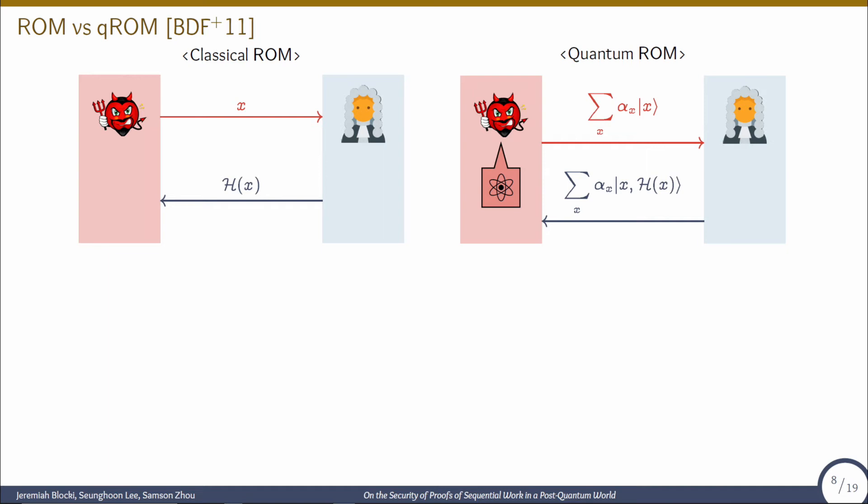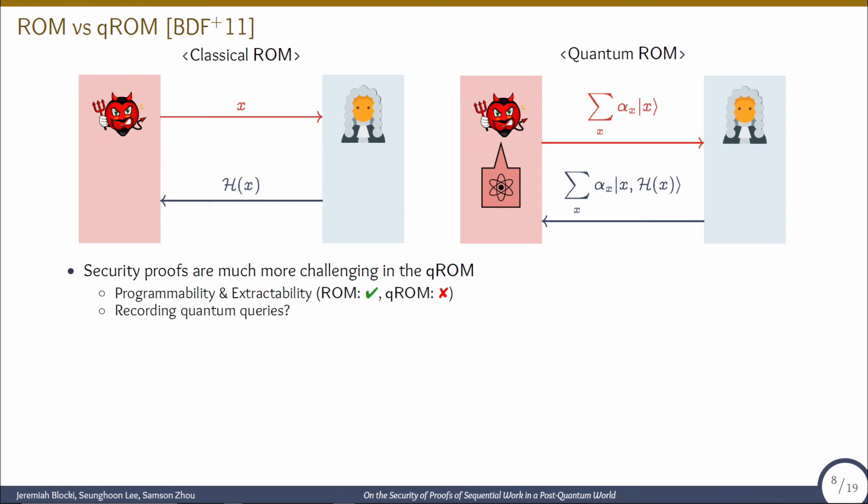Now let's talk about the parallel quantum random oracle model. In the classical random oracle model, when an adversary makes a query x, he gets output h(x), and for unqueried inputs the outputs are uniform at random. But in the quantum random oracle model, the adversary can make a superposition of queries and gets the output as a superposition of hash outputs. Security proofs are much more challenging in the quantum setting, and useful properties such as programmability and extractability no longer apply. It was not even easy to record quantum queries without the adversary detecting, since measuring the superposition of states causes collapse.